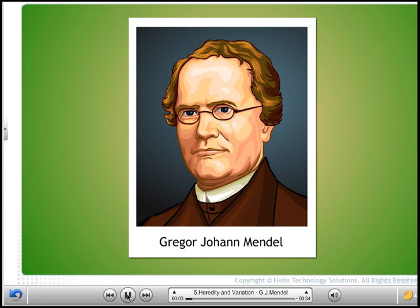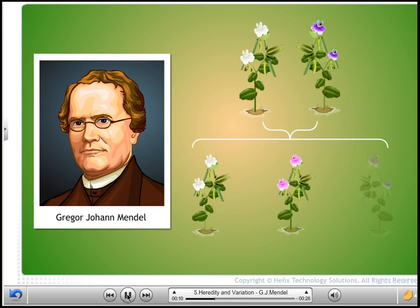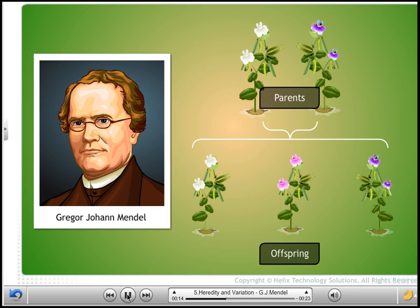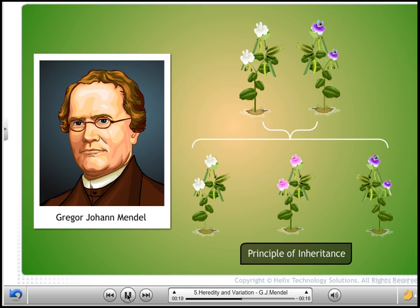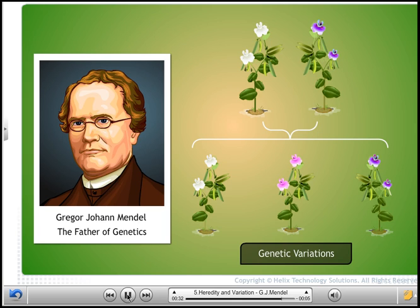Gregor Johan Mendel was the pioneer among geneticists who discovered the concept of inheritance of characters or traits from parents to offspring. He proposed the principle of inheritance and is known as the father of genetics. He experimented with pea plants and found variations among them. Later, these variations were found to be genetic variations.